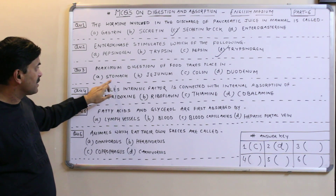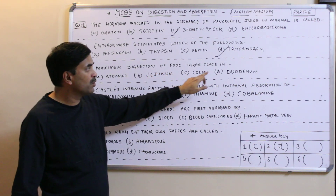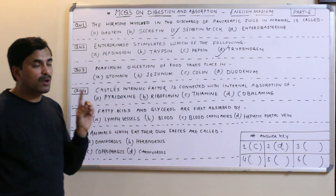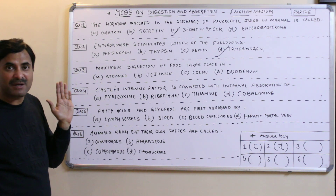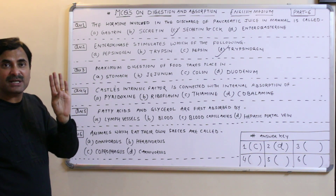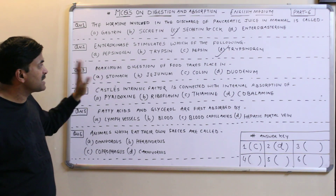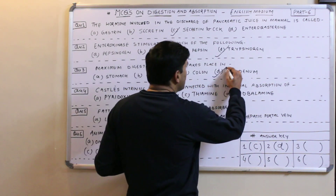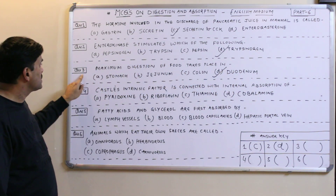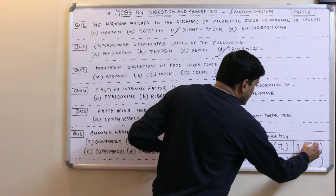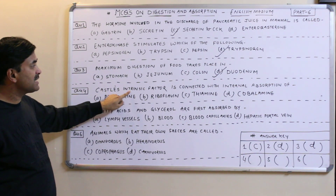Maximum digestion of food takes place in — stomach, jejunum, colon, or duodenum. Always remember that maximum digestion occurs in the small intestine, which consists of three parts: duodenum, jejunum, and ileum. Maximum digestion takes place in the duodenum, the first part of the small intestine. So the answer to question number three is D.